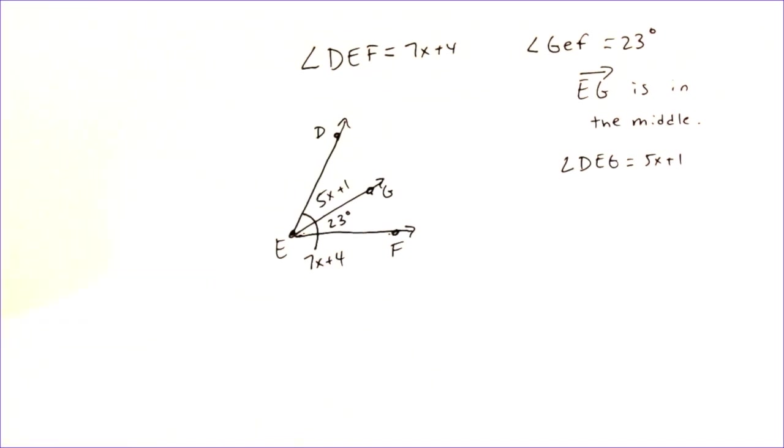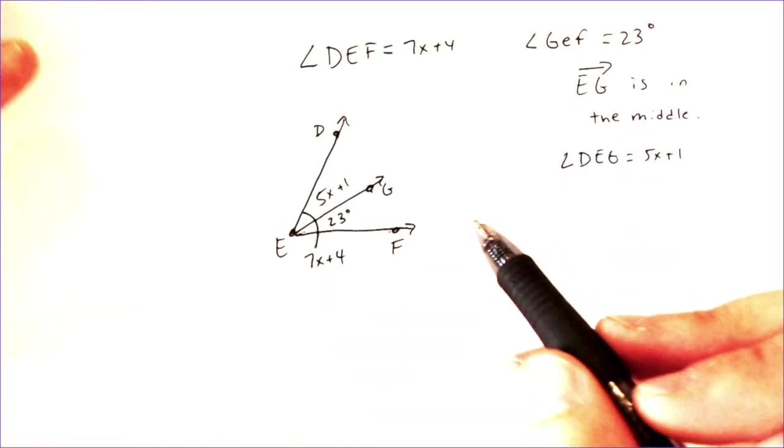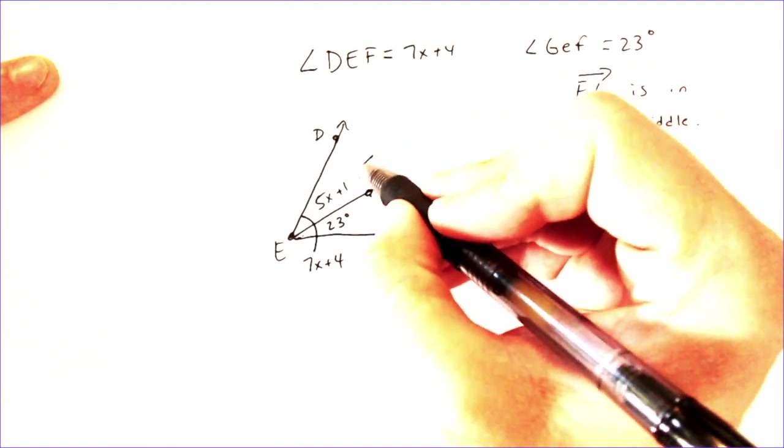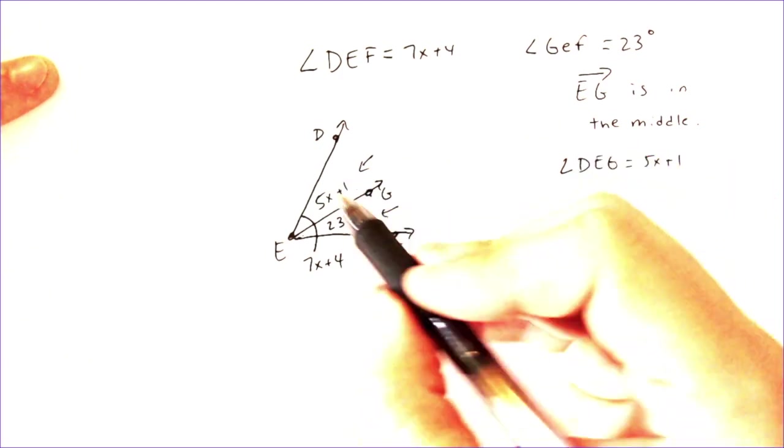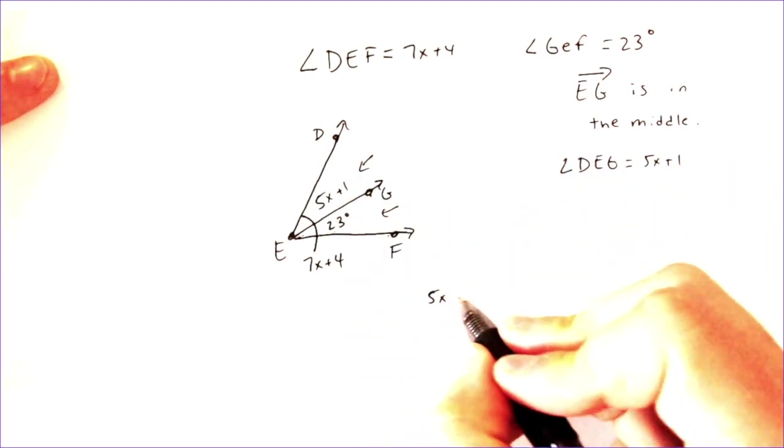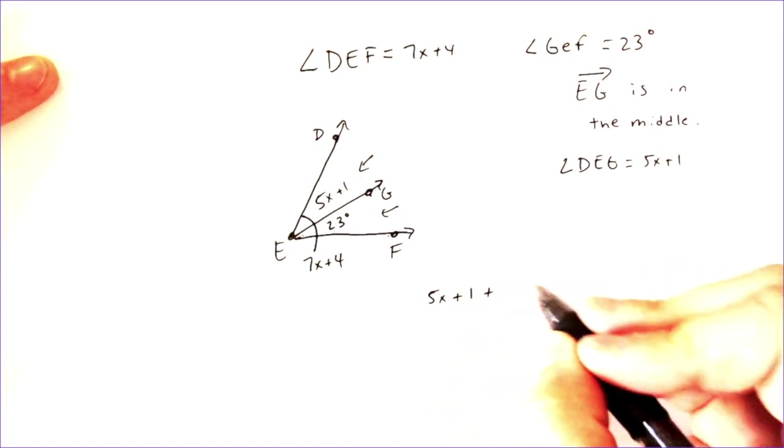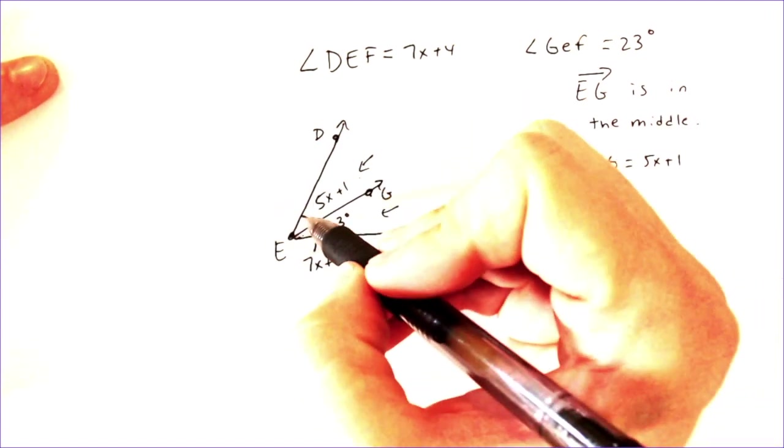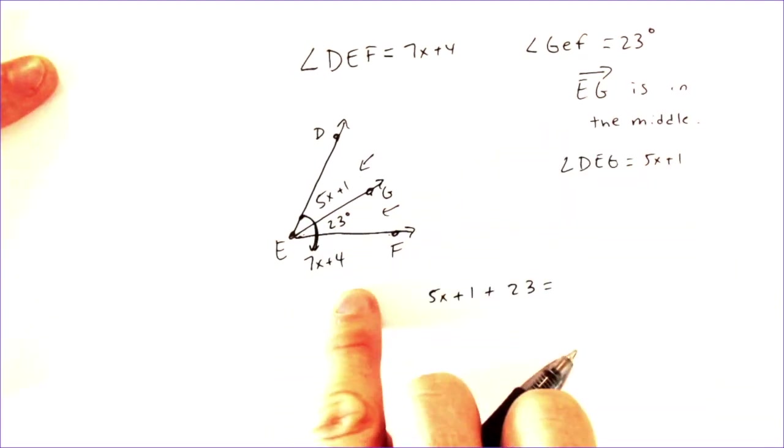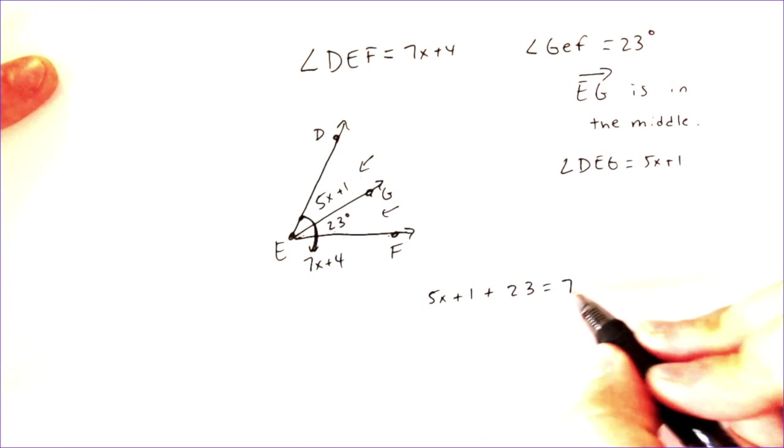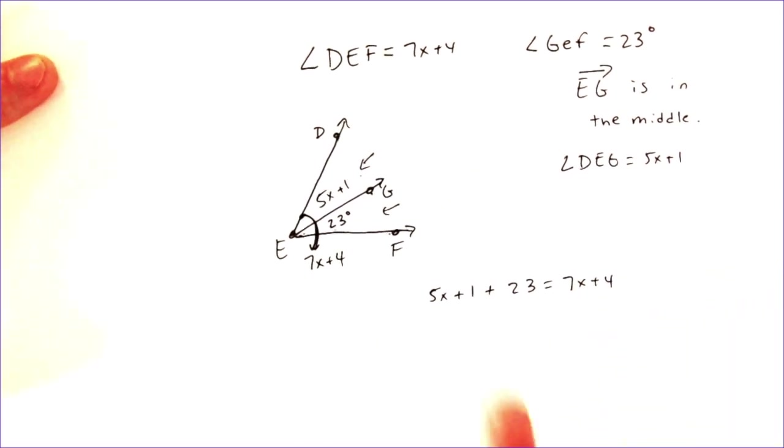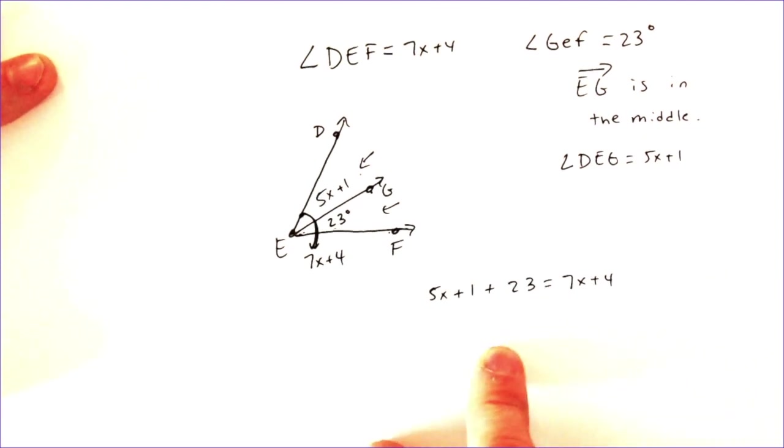And the last thing that we're going to be given is the angle DEG is equal to 5x plus 1. So, if I know angle DEG is equal to 5x plus 1, I can fill that in there as well, 5x plus 1. And you'll find that some of these problems won't give you the picture, and you're going to have to draw it out the way that we did here. But now that we have that information, I can add up the two smaller parts or the two inside parts, which is here and here. I can add that 5x plus 1 and the 23. I can add the two portions of the angle and equal it to the whole thing. Well, from here all the way down was the 7x plus 4. That's the whole thing. That's what I'm going to have to set this equal to. And that's the geometry part.